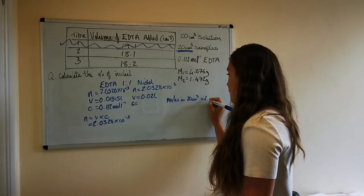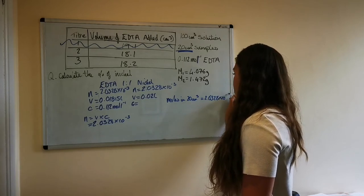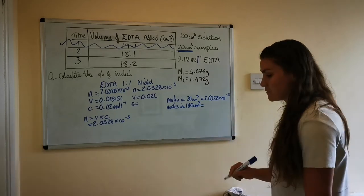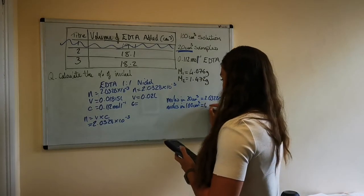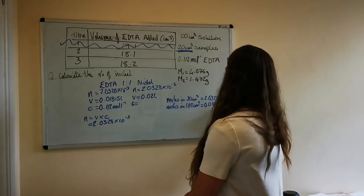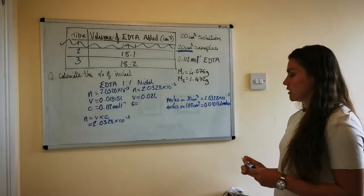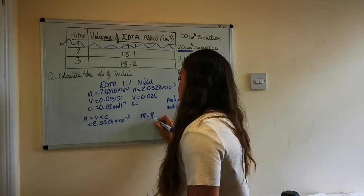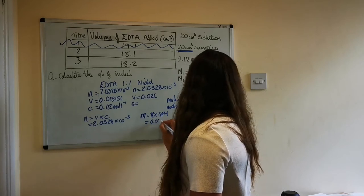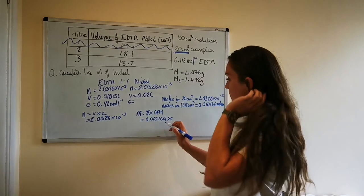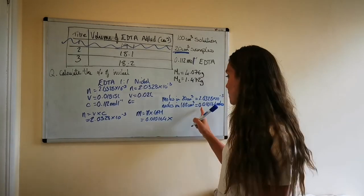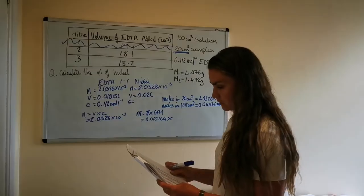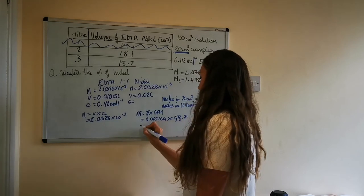So the moles in 20 cm³ was 2.0328 × 10⁻³. So then that means that the number of moles in 100 cm³ is that times 5, because times 20 by 5 you get 100. That gives you 0.010164 moles. Okay so that's how many moles are in the whole solution. So now we take that number of moles and convert it into a mass: m = n × GFM. So 0.010164, that's the number of moles, and then you're going to multiply that by the gram formula mass of nickel because this is the moles of nickel that we've calculated. So the gram formula mass of nickel if you look up the data booklet is 58.7.